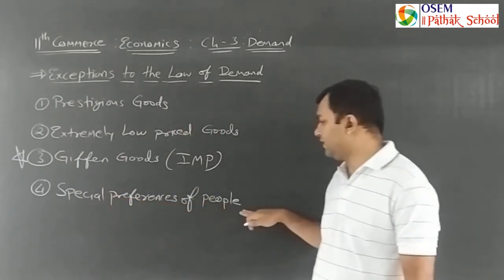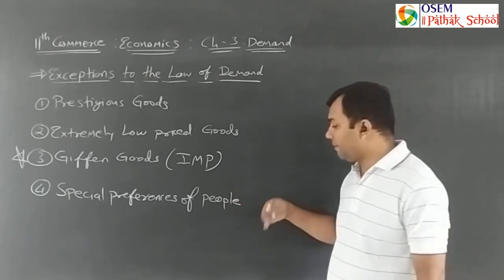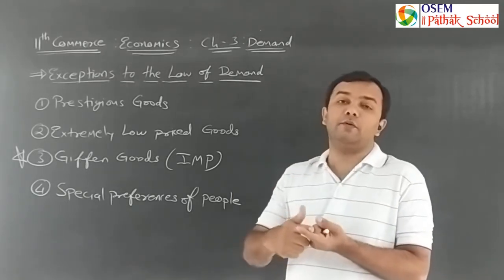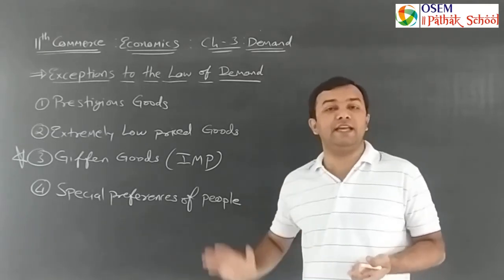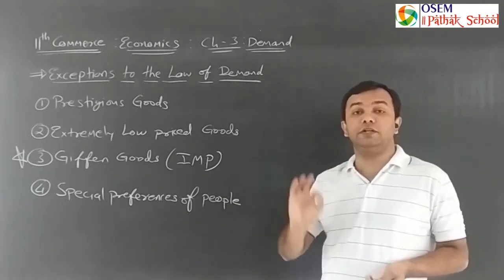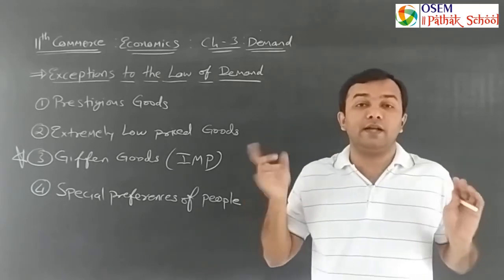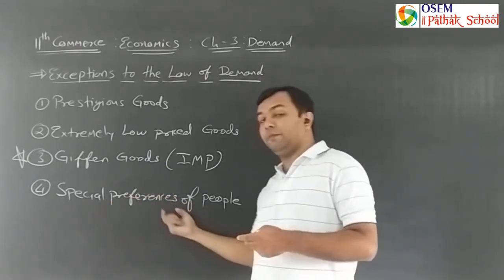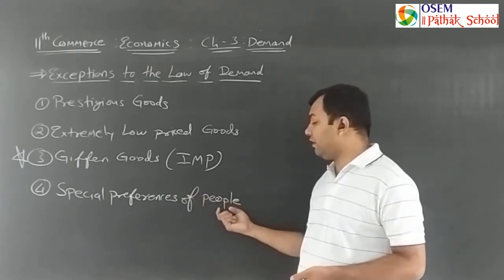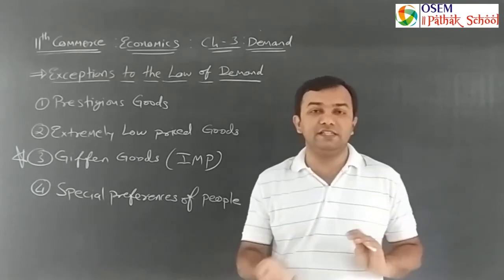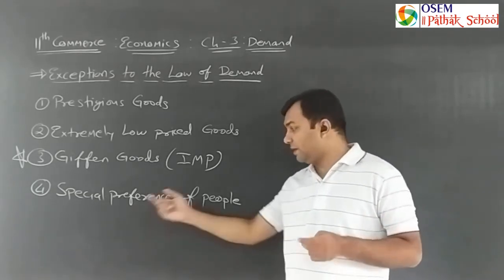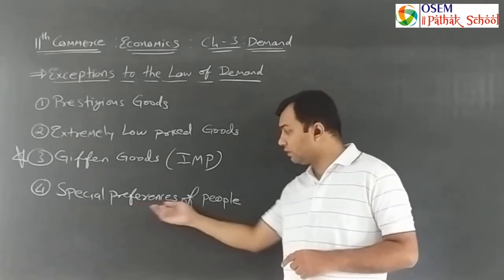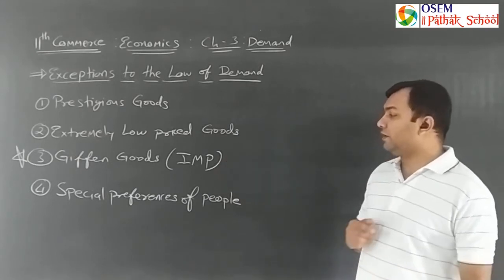The third exception is special preference of people. For example, if someone has a strong preference for Coca-Cola, they will not switch to Thumbs Up, Fanta, or Sprite even if the price of Coca-Cola increases. Because of this special preference, demand does not decrease with a price increase. This is the special preference exception.